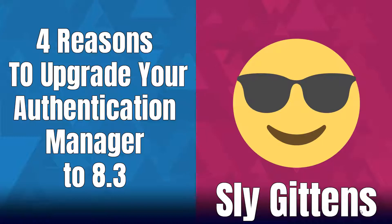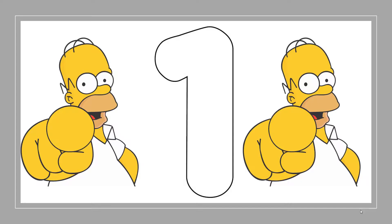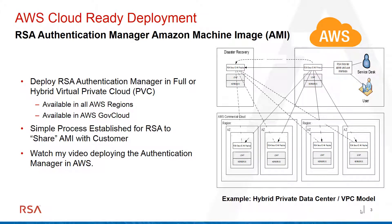There's no difference with Authentication Manager 8.3. We're going to cover all the new enhancements that RSA allows you to do. So if you're at 8.1 or even 8.2, make sure to update to 8.3. Now you get access to deploy Authentication Manager in AWS. The benefit depends on how you want to deploy it — on-premises physical server, virtual server like VMware or Hyper-V, or in the cloud.